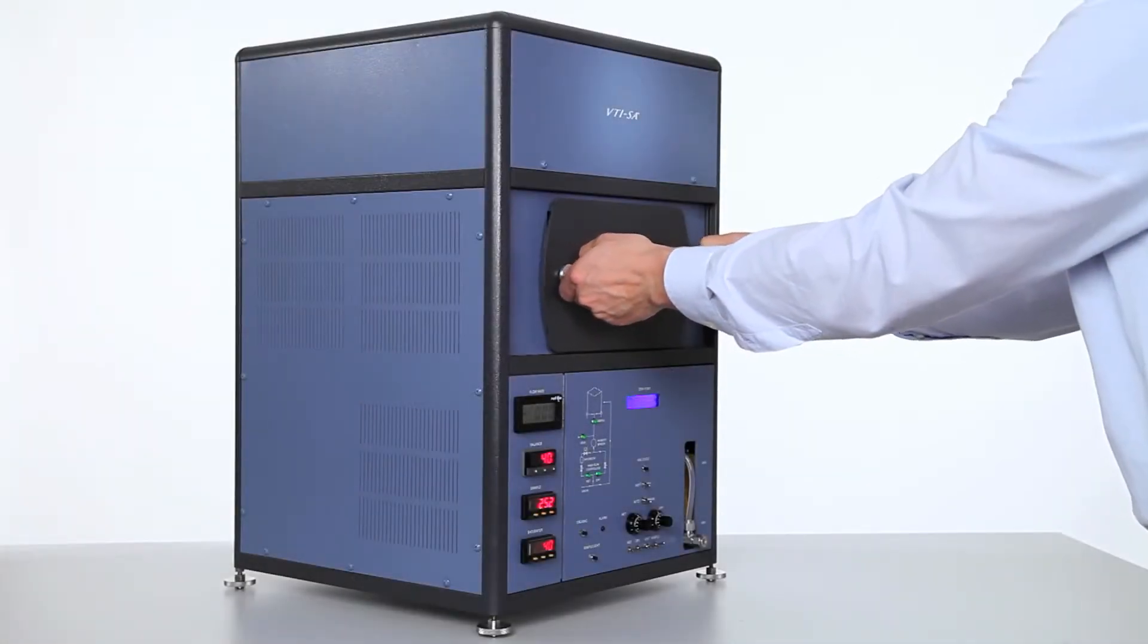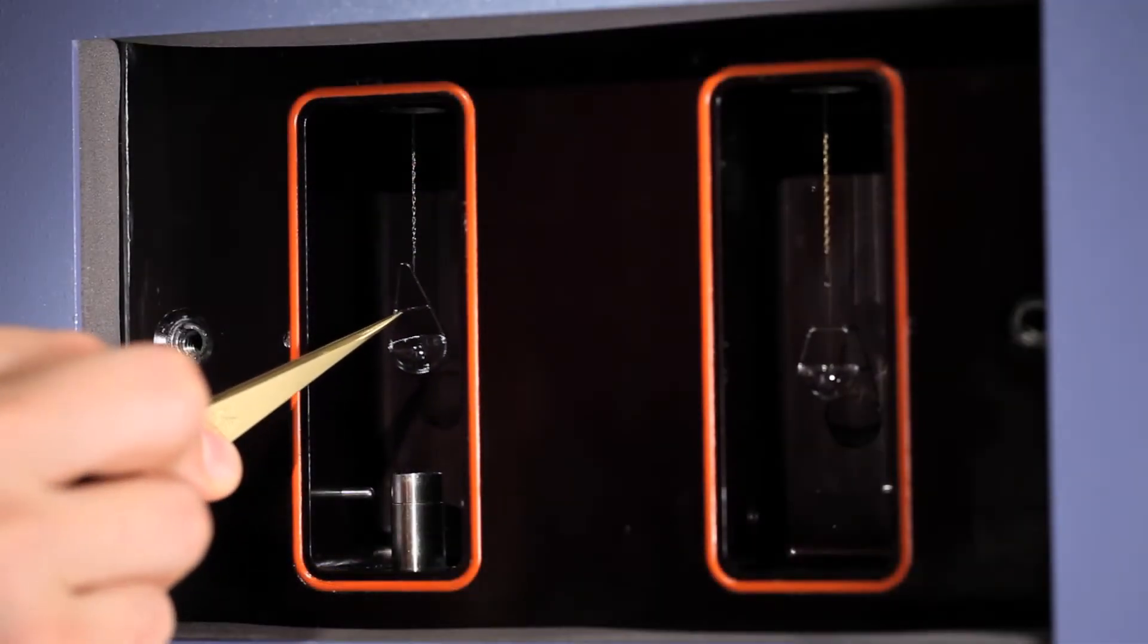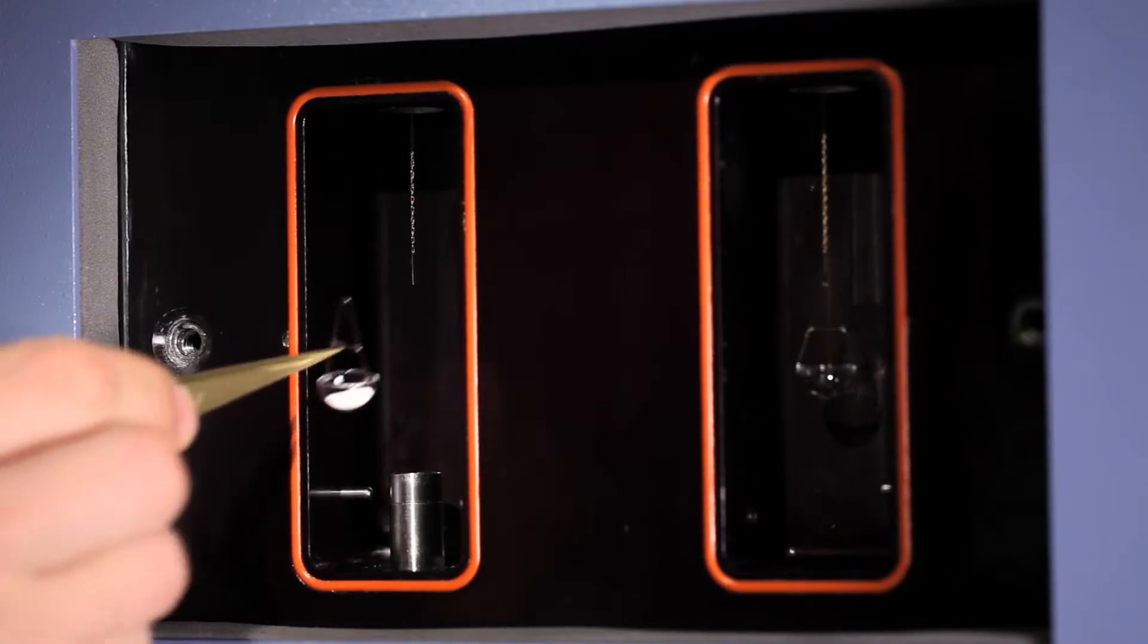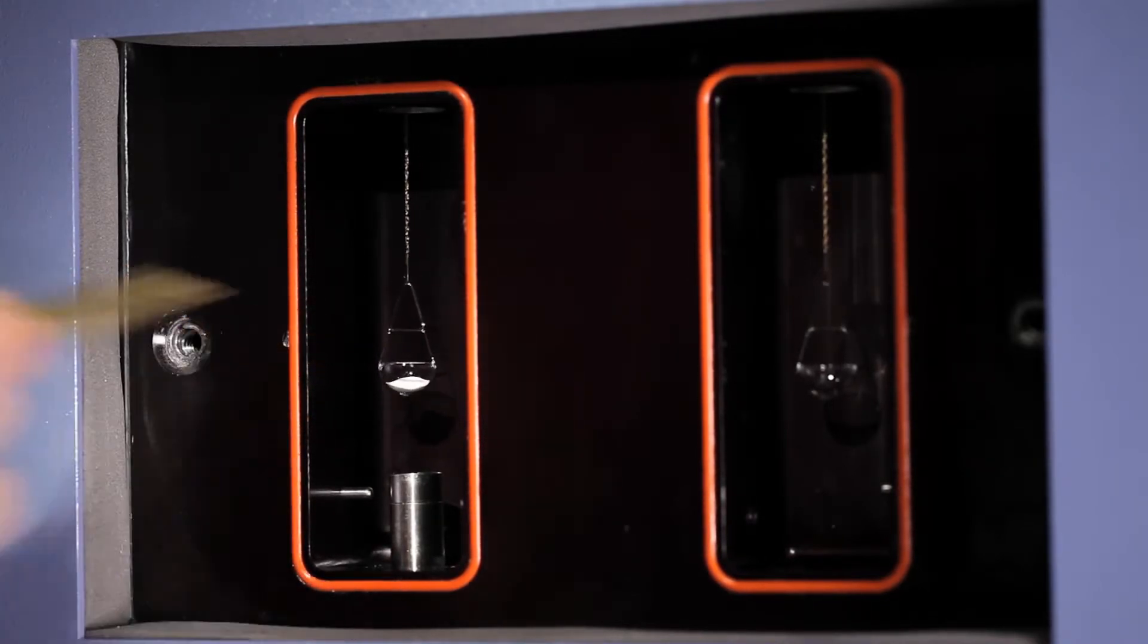Open chamber door and carefully remove a sample, placing it on a clean surface. Fill the pan with the sample. Hang the sample pan from the hangdown chain. Choose the same type of pan for the reference side.